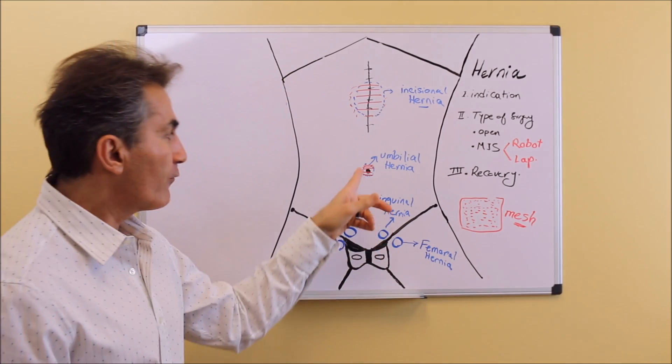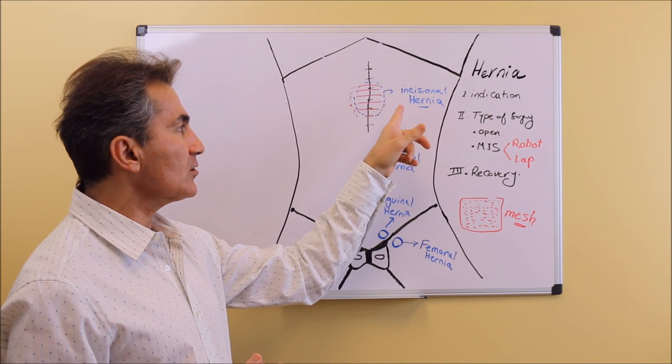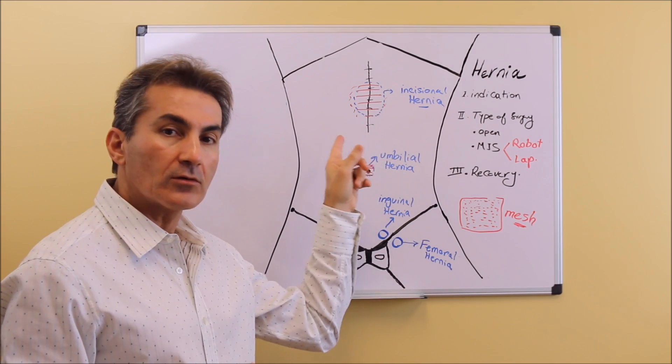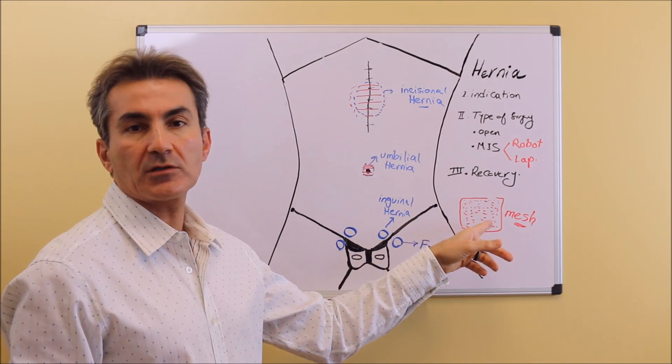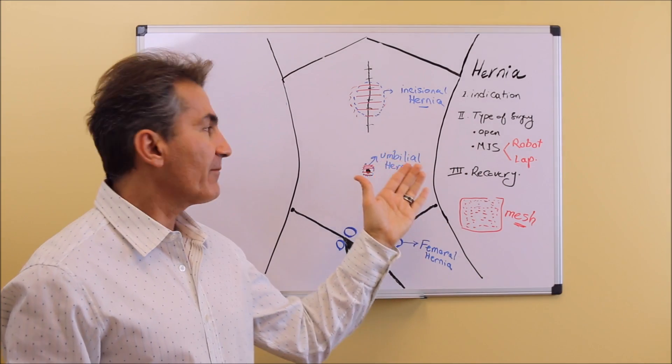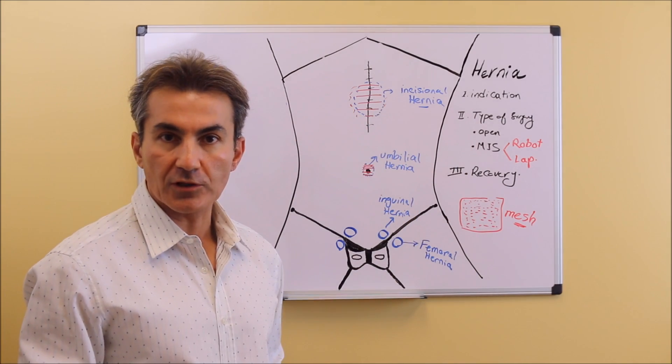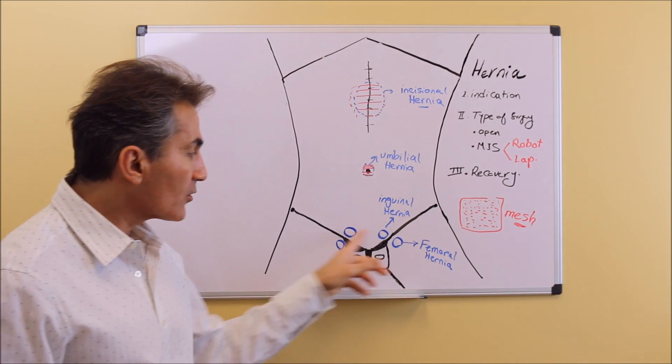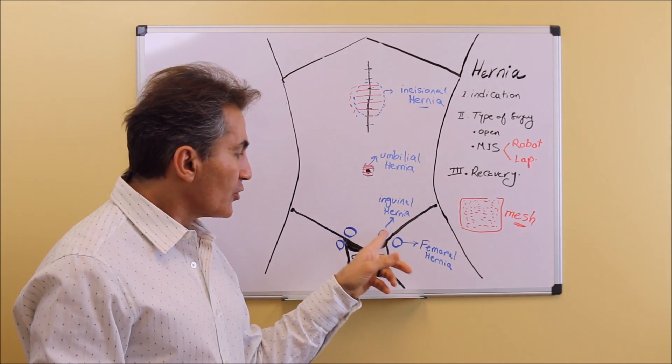That's the whole concept of hernia repair. For umbilical hernia and incisional hernia, you can directly close the muscle and place the mesh on top or below the muscle to reinforce the closure. In the groin area, we're usually unable to close the muscle directly.